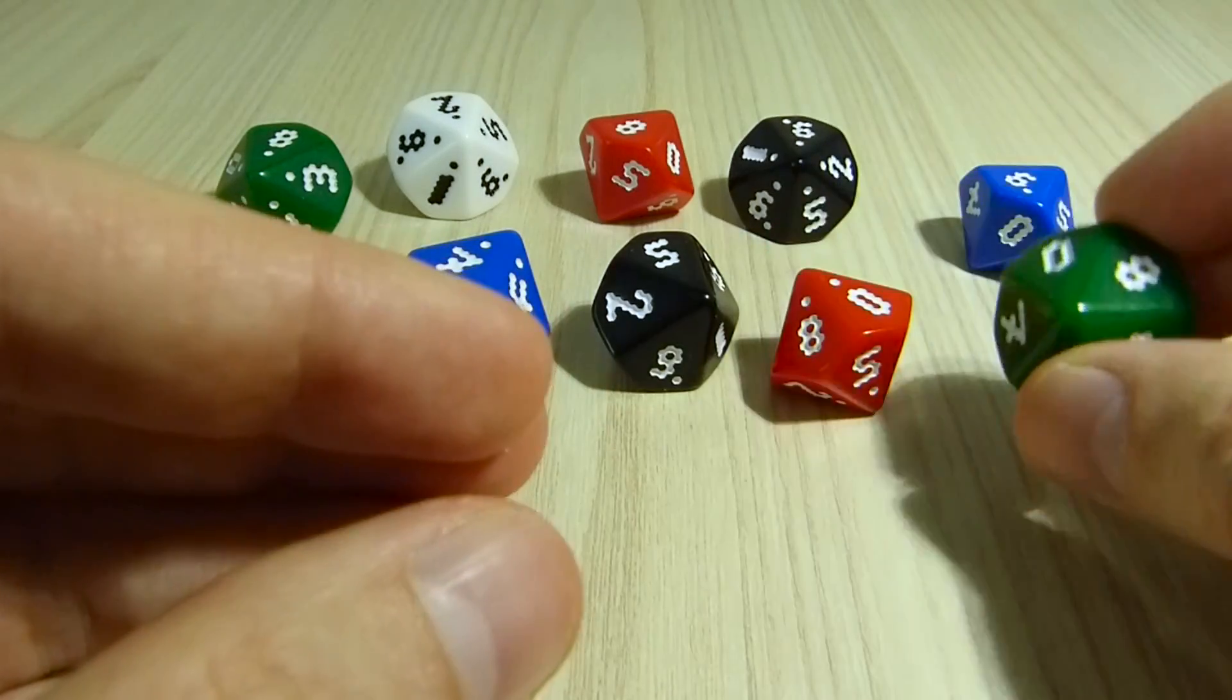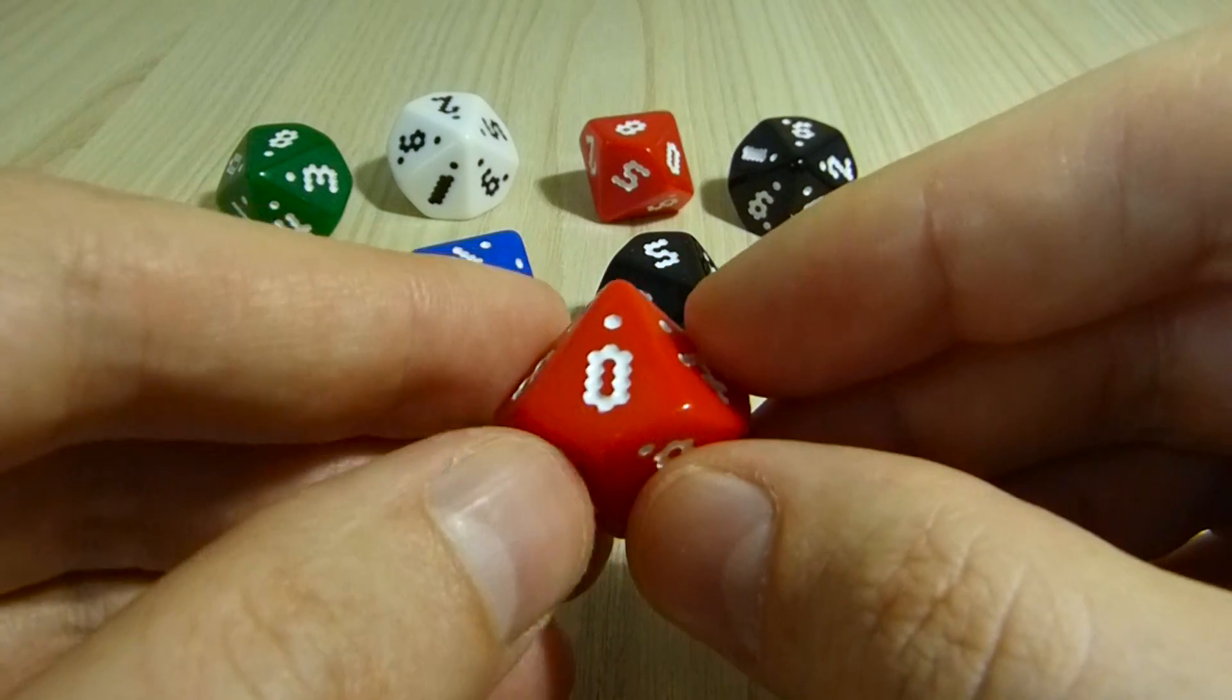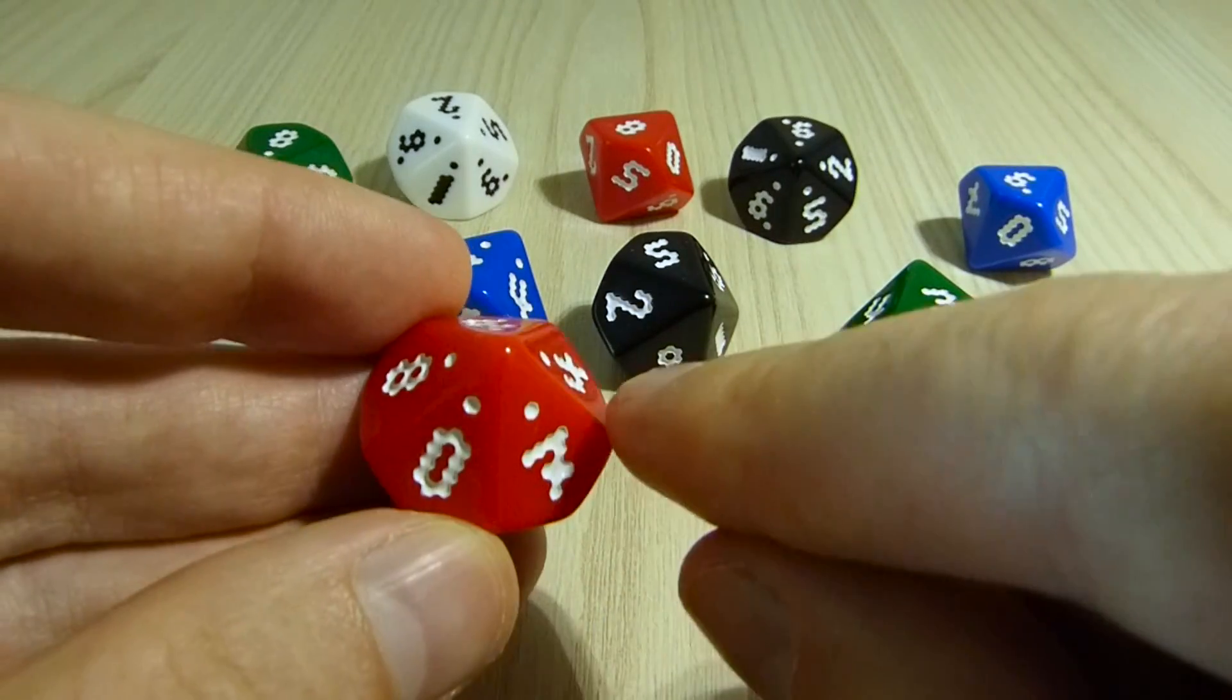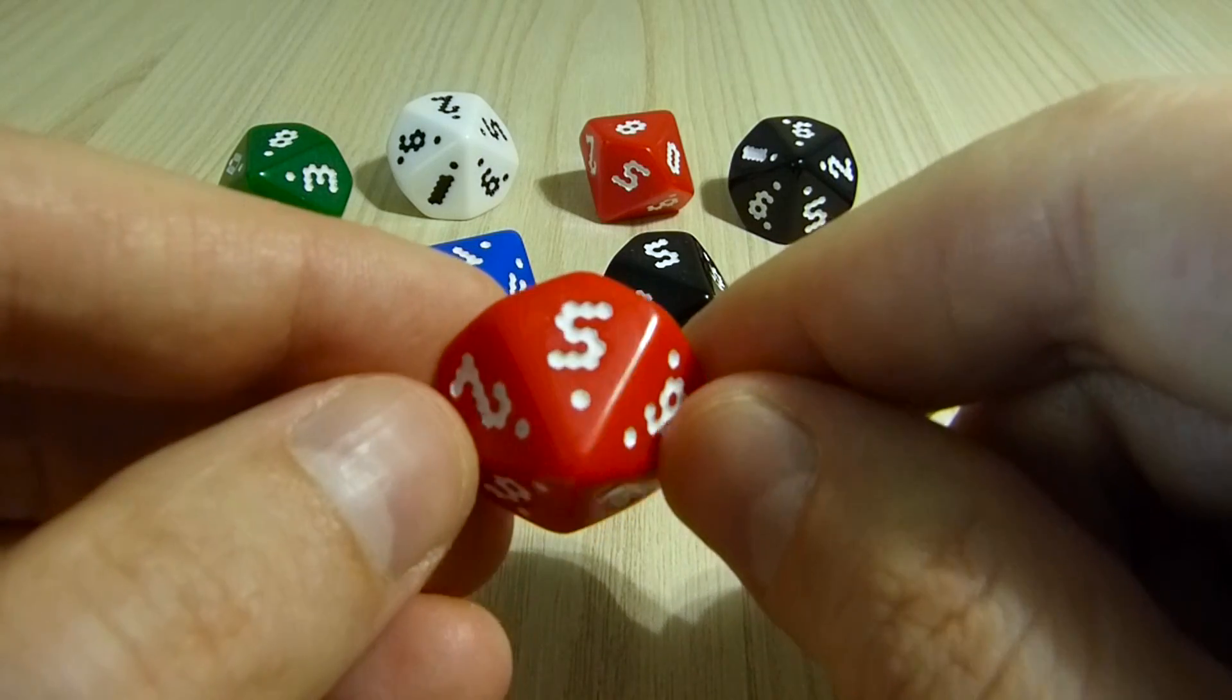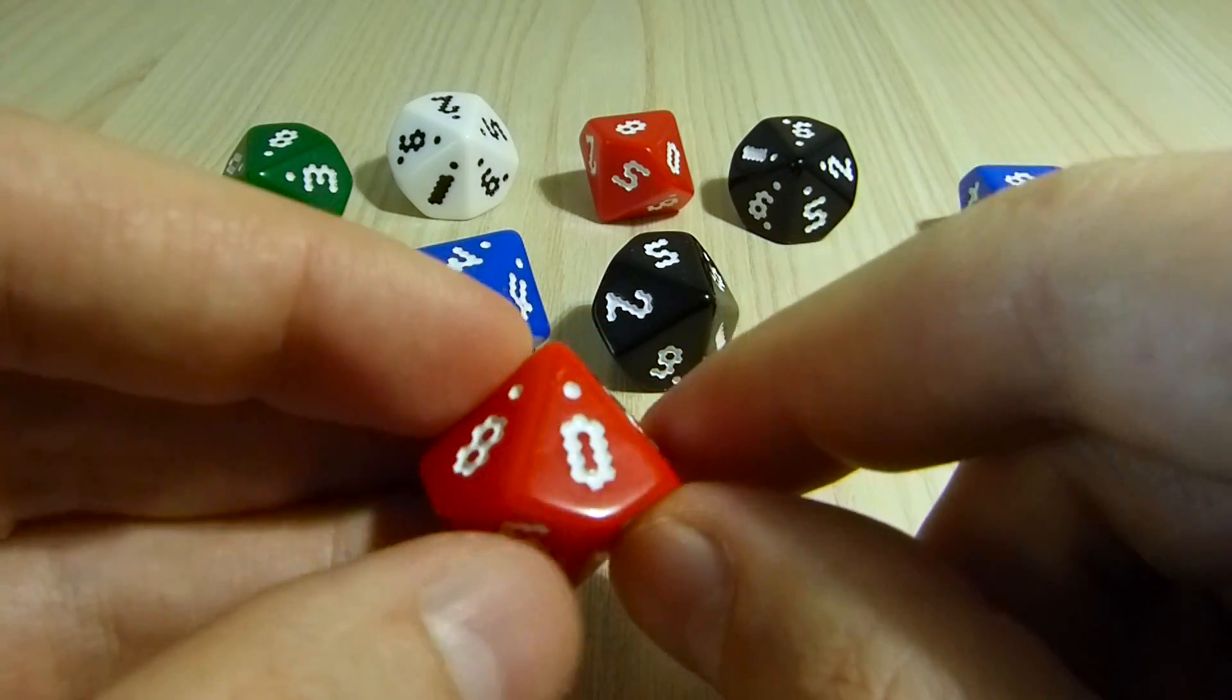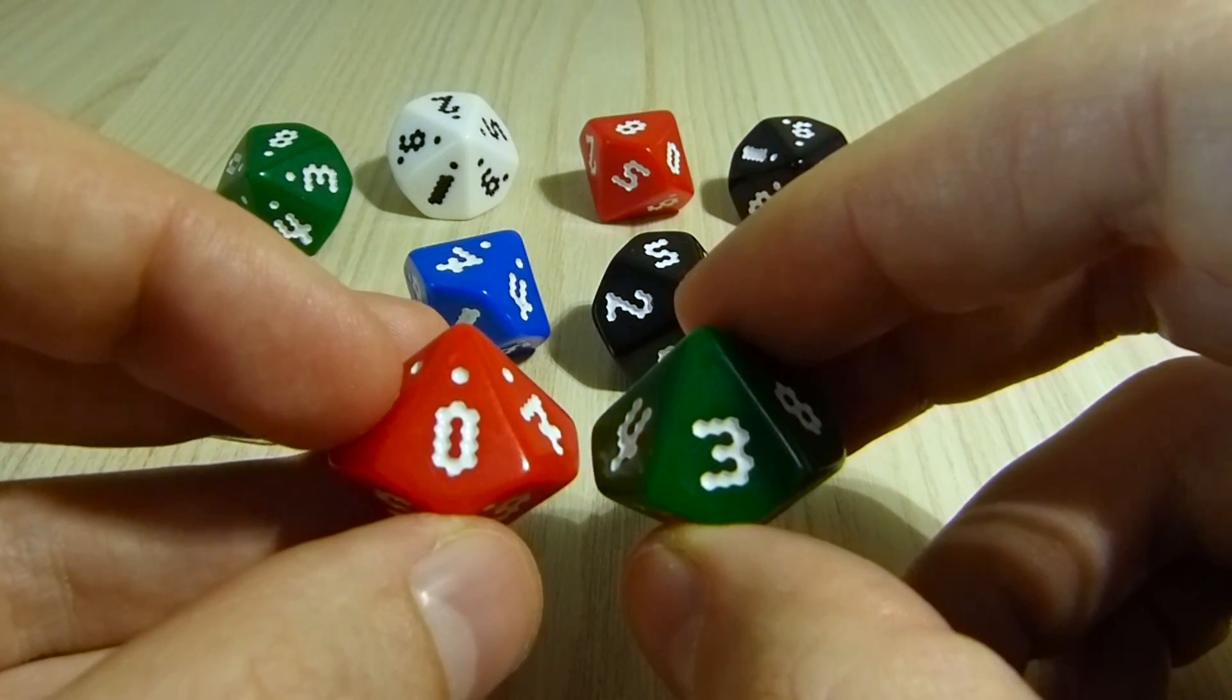You'll also notice on the tens dice, so the units dice and the tens dice, the only way we signify this is with an extra little hex dot on the top. It's still balanced in the sense of the material removed has the same center of mass from each face, but without actually putting in an extra digit, it means that it's more readable.